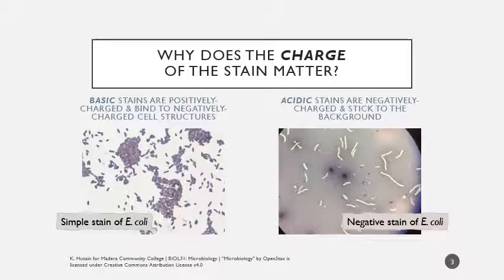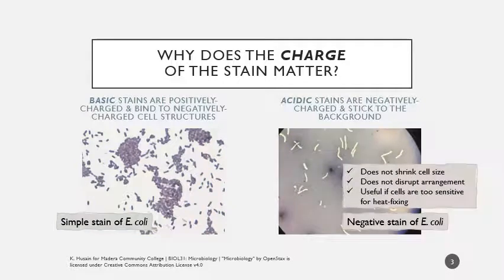In these two images, we see two stains of E. coli. The one on the left has been heat fixed and stained with a basic positively charged stain — a simple direct stain. With the indirect negative stain, we are not heat fixing, so we're not going to shrink the cell size at all or disrupt the arrangement. If the cell membrane or wall is too sensitive for heat fixing, this allows us to visualize it without damaging those cell structures. Flagellar stains are another situation where you really don't want to be heat fixing — you want to be cautious of the outside structure of the cell.